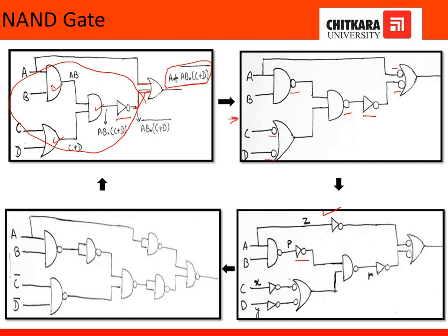Step 4 is then followed: we place inverters at each branch wherever we have placed bubbles to cancel the inversion effect. We placed a bubble at one point, so we use an inverter there. We placed bubbles at another point, so we use two inverters there. Two inverters mean complement of complement equals the original, so they cancel each other out.